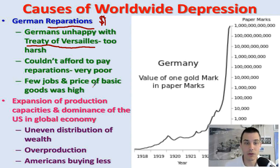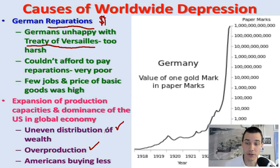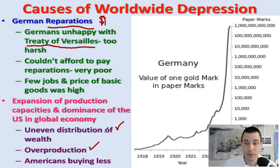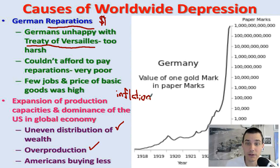Overall, really across the United States and globally, you had an uneven distribution of wealth. You had what's known as overproduction of goods, so the supply and demand curve was messed up. And in America particularly, people were buying less. You also had inflation, which means the value of money was going down while prices go up. Look at Germany in 1918 — not a whole lot of inflation.